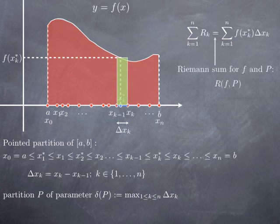This approximating sum that we have just defined, I'm going to call that the Riemann sum for the function f and for the partition p, where p is a pointed partition of the interval [a, b]. And I'm going to denote that R(f, p).